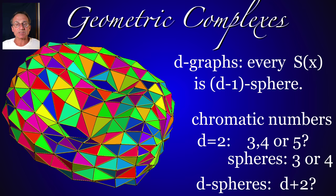A subclass of complexes are D-complexes, graphs for which every unit sphere is a D-1 sphere. A D-sphere is just a D-graph which becomes contractible after a single point is removed. Chromatology is interesting for such graphs. The general belief is that every two complex has chromatic number 3, 4, or 5, that every D-sphere can be colored with 3 plus D plus 2 colors.